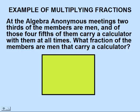Let's start with a rectangle that will represent all the members of this Algebra Anonymous group. Then we'll divide it into thirds. We know that two-thirds of the group are men. So we'll fill these in with kind of a brown color here.